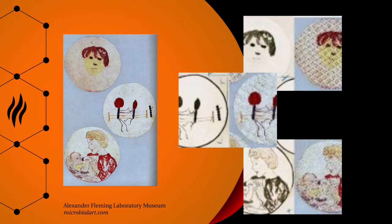He would sketch out an image on an agar plate using a loop and different microorganisms as the pigments, inoculating each section with precise timing in order to ensure the colonies all matured at the same time, but before they all began colliding together as they continued to grow, since there was no way to preserve his work during his time.